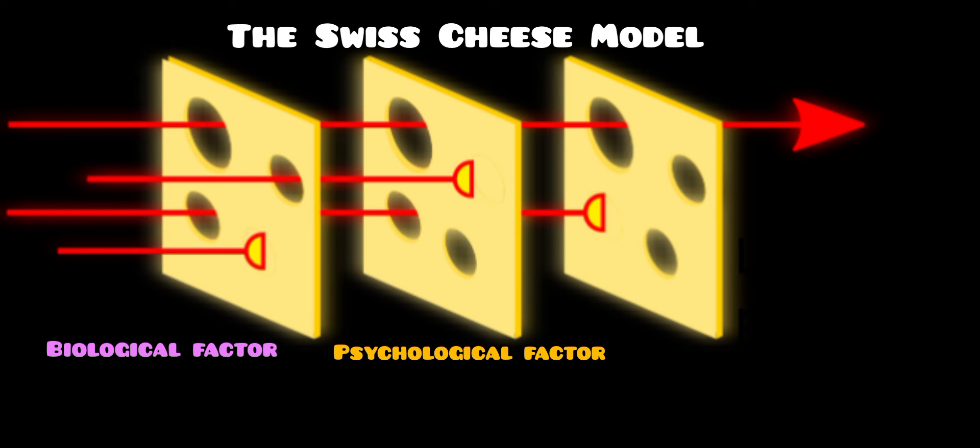The second slice is a psychological factor, for example the person has an addictive personality, or people with aggressive behaviors have a tendency to become drug addicts.